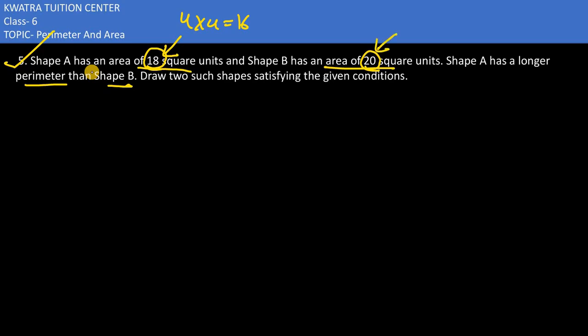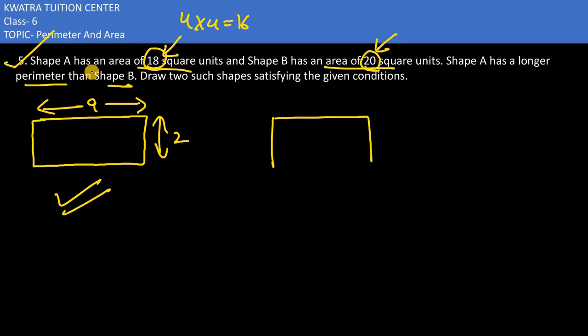Now in the first case we can take length as 9 and breadth as 2. This would have a longer perimeter. In the second situation, we have area 20. We can use the combination here 5 and 4 for length and breadth. Now you can find the perimeter for both of them.